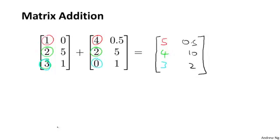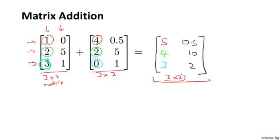And it turns out you can add only two matrices that are of the same dimension. So this example is a 3 by 2 matrix because this has 3 rows and 2 columns. This is also a 3 by 2 matrix. And the result of adding these two matrices is a 3 by 2 matrix again. So you can only add matrices of the same dimension, and the result will be another matrix that's of the same dimension as the ones you just added.